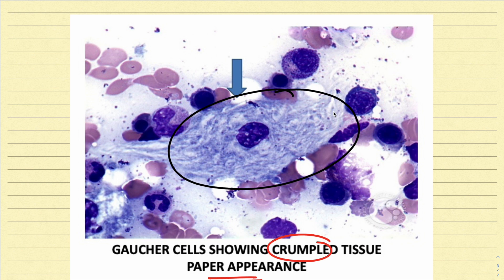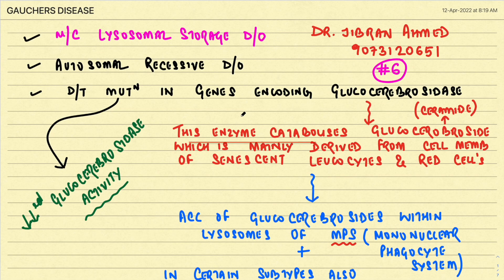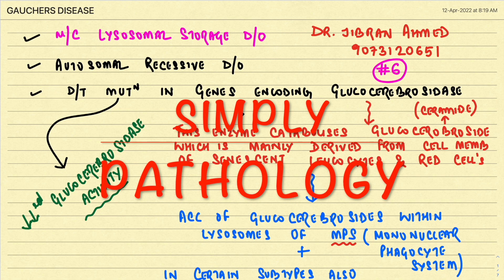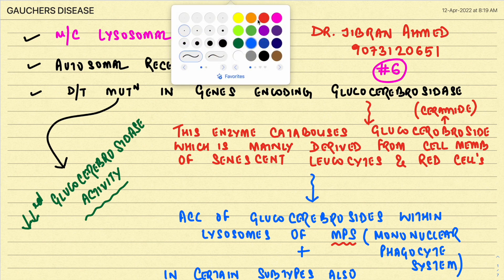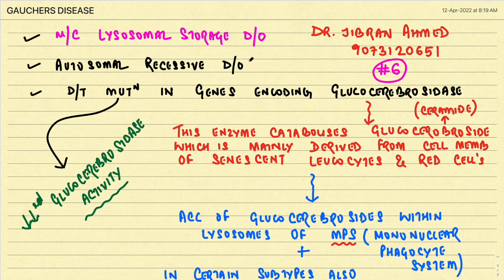This is a classical feature and a very important exam question. Good morning and welcome back. I am Dr. Jibraan Amat, presenting Simply Pathology. Today we are back with another very important high-yield topic — series number six — Gaucher's disease, a very repeatedly asked and hot exam question.